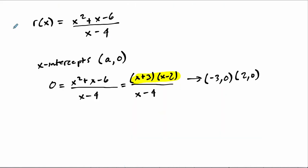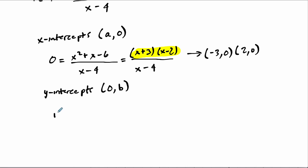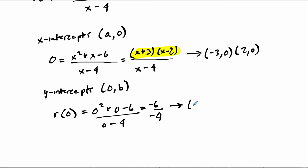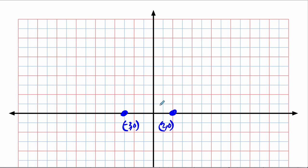We're getting a picture of this graph already. Now let's go for the y-intercept. Y-intercepts are of the form (0, b) — the x value is 0. We plug in 0 for x: 0 squared plus 0 minus 6, over 0 minus 4, which is negative 6 over negative 4. So our y-intercept, when we plug in 0, gives an output of positive 1 and a half. Let's plot that out.